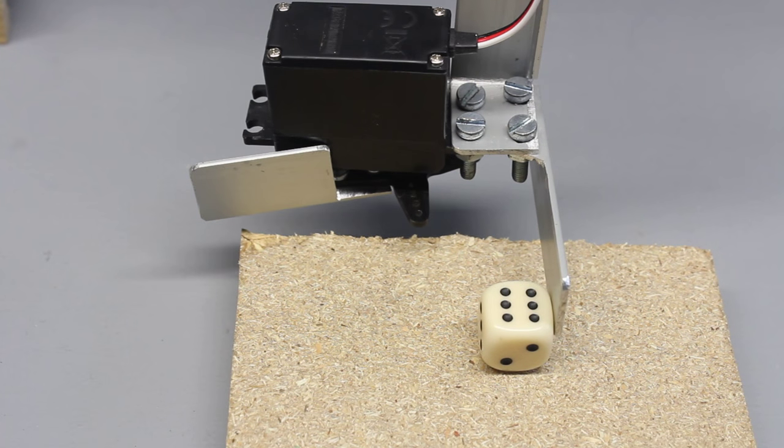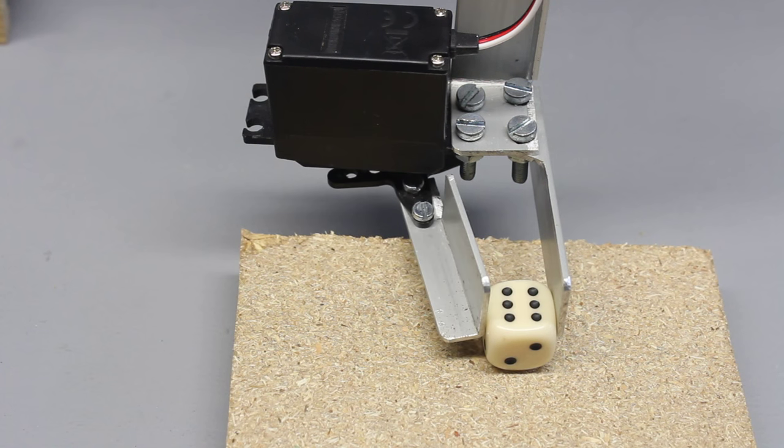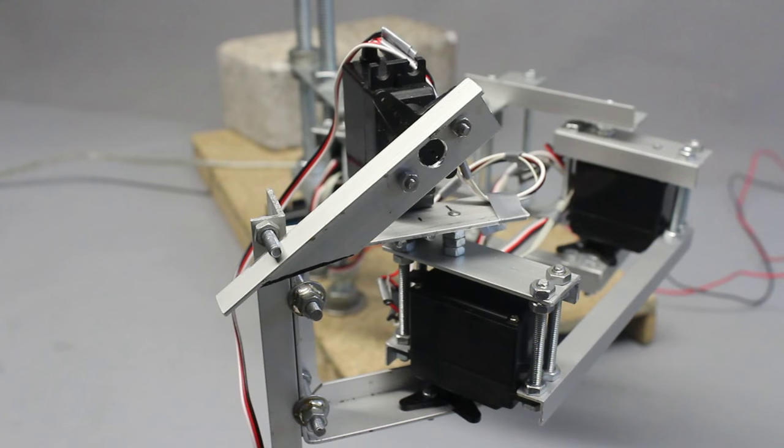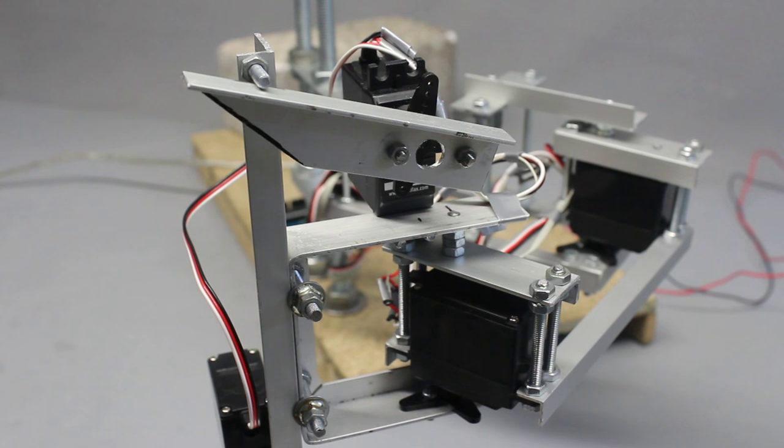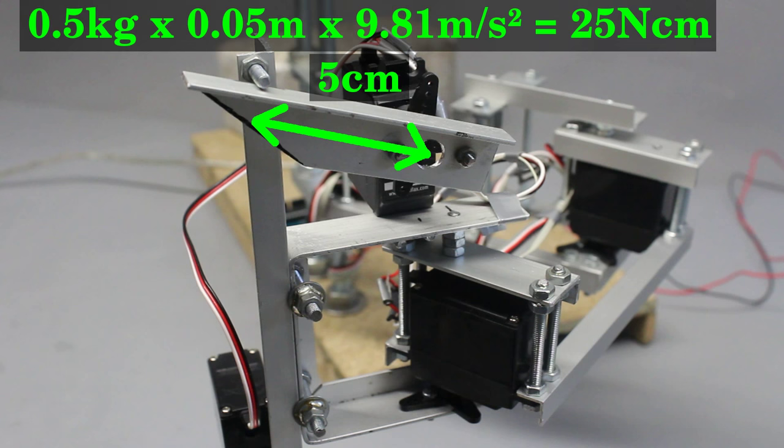Objects are grabbed with servo number 5 and lifted with servo number 4. The lever is just 5cm by what the servo can lift objects with a mass of up to 500g, in theory.